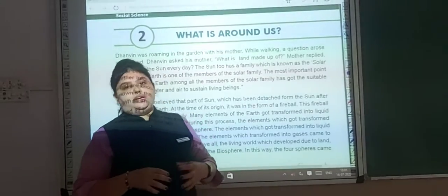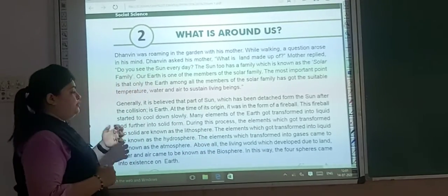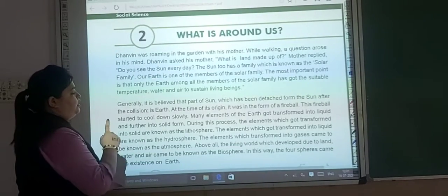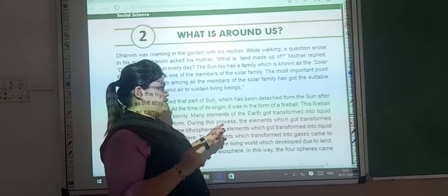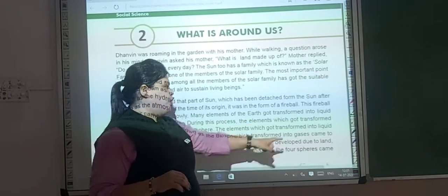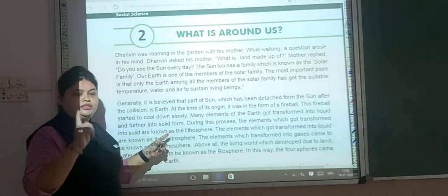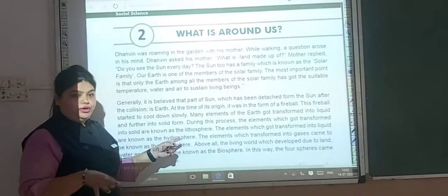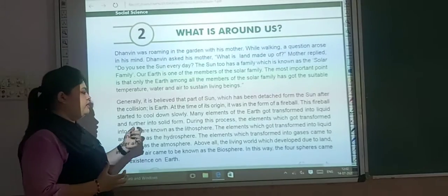Many elements of the earth got transformed into liquid and further into solid form. During the cooling-down process, the elements which got transformed into solid are known as the lithosphere. This is the definition of the lithosphere.